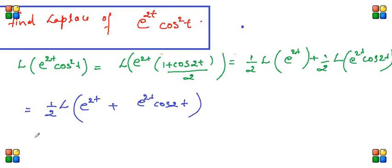So in a way we will use the shifting property. Half is common. L of 1 it is 1 by s, but here e raised to at is being multiplied, so s should be replaced by s minus a. Therefore this is this thing.